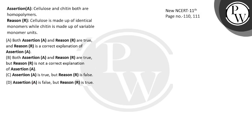Hello guys, let's see this question. The assertion is: cellulose and chitin are both homopolymers. So how can this statement be corrected?